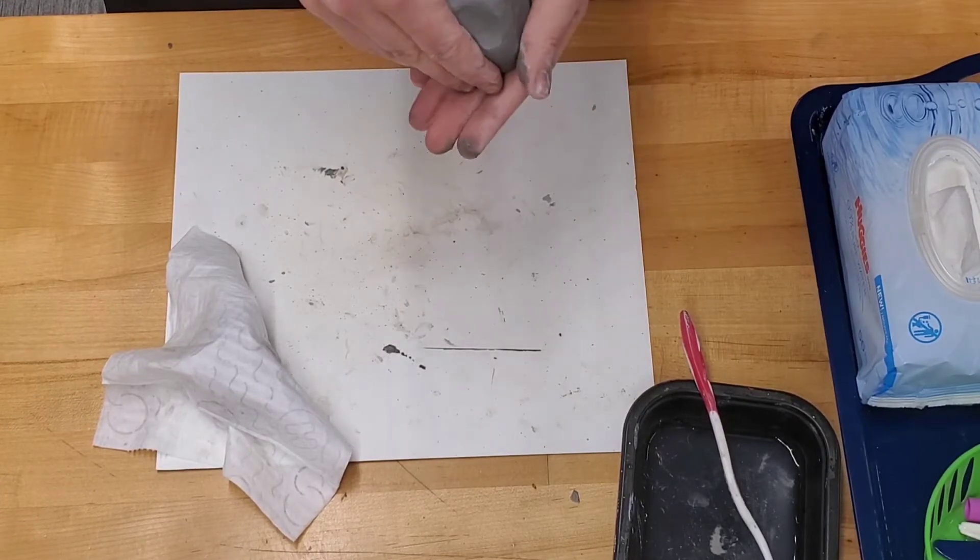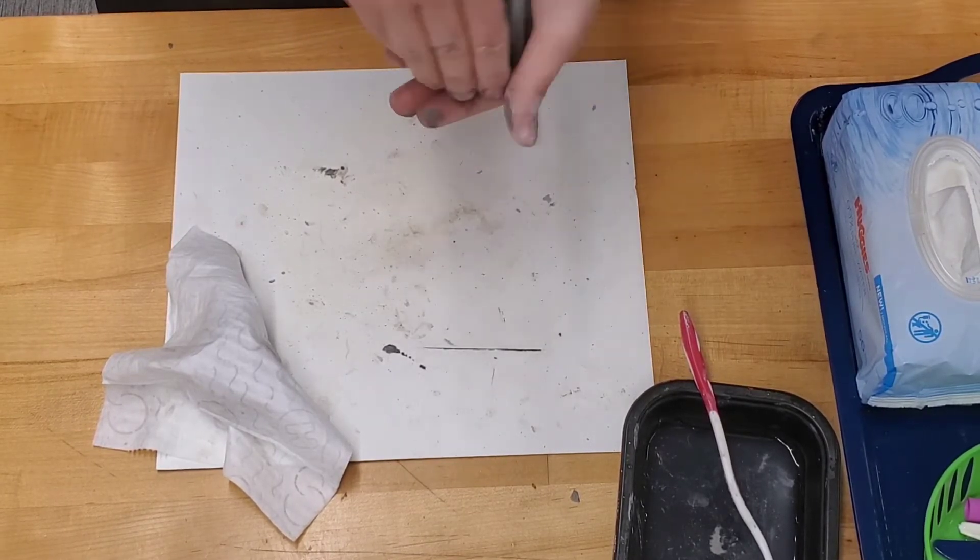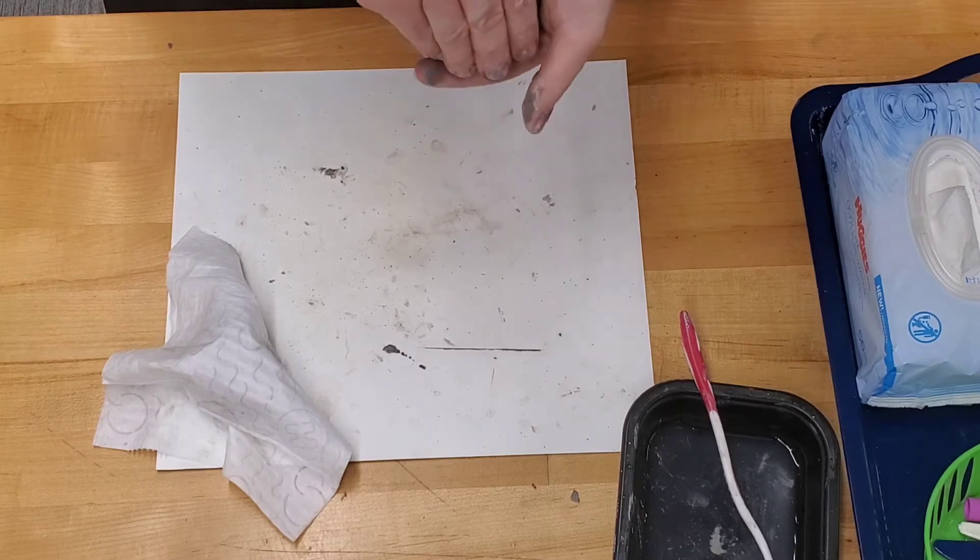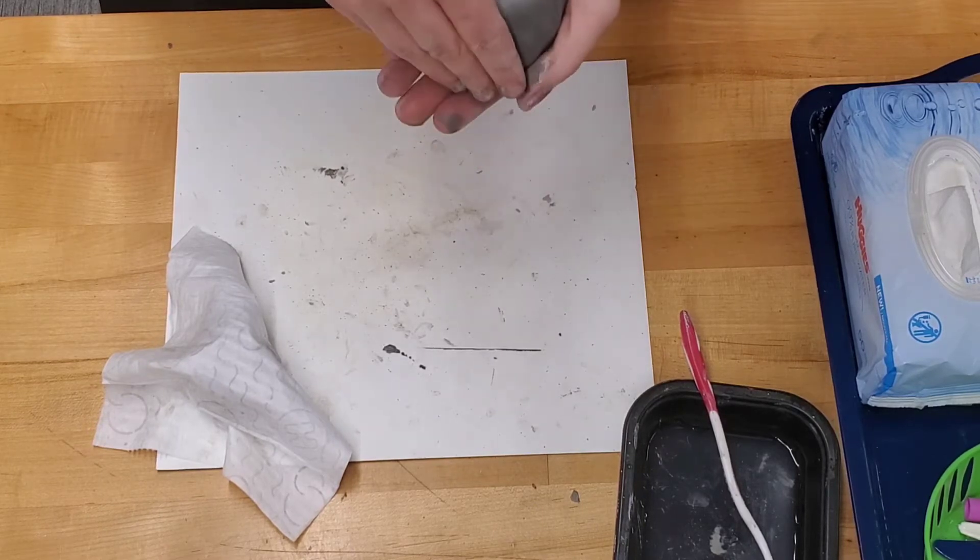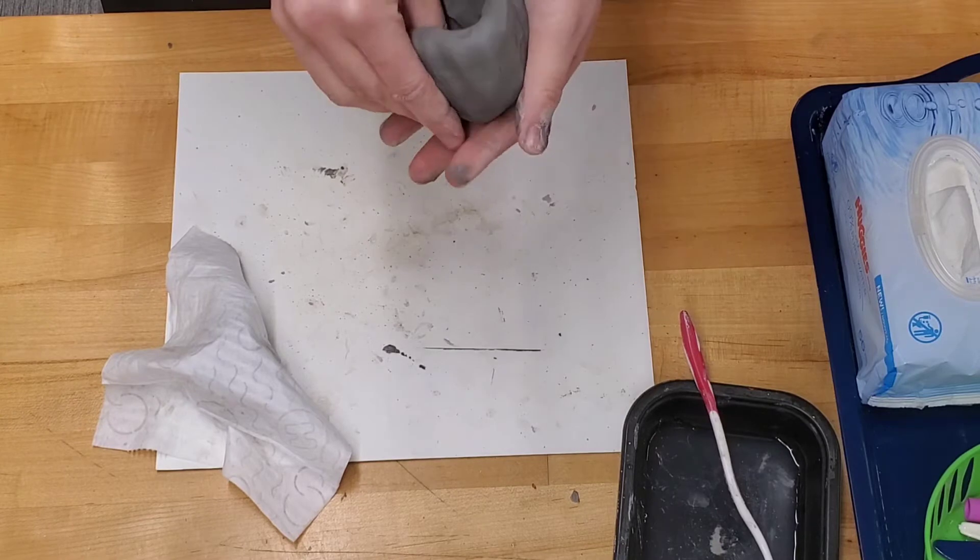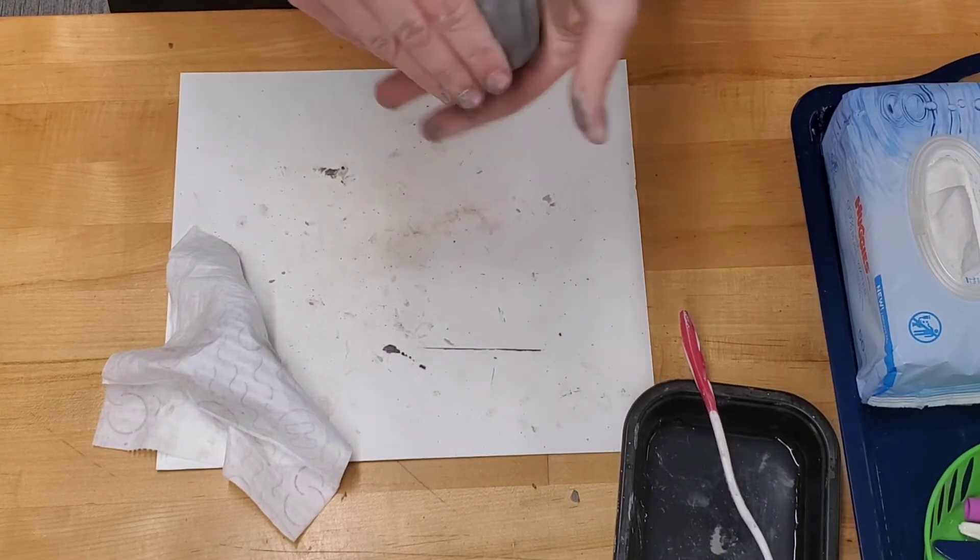gently pinch the sides round and round. You want to keep the thickness about as thick as an Oreo cookie or about as thick as your pinky finger.